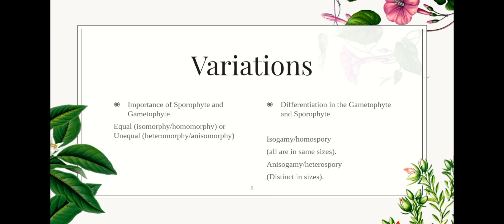Alternation of generations has variations. First is the relative importance of sporophyte and gametophyte. This can either be equal — homomorphic or isomorphic — or unequal — heteromorphic or anisomorphic. For equal, these are plants that have diploid sporophytes and haploid gametophytes which are externally identical. One example is the algae of genus Cladophora, which are found in fresh water. No living land plant has equally dominant sporophytes and gametophytes, although theories of evolution of alternation of generations suggest that ancestral plants did.